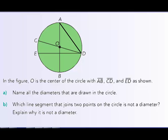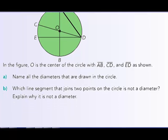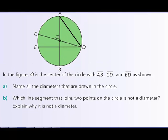Looking at the next slide, we have some pictures with radius, diameter, and chord. In figure O — which is usually the center of a circle, labeled either C or O — you can see it's labeled O. The circle has segments AB, CD, and ED as shown.